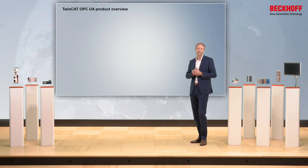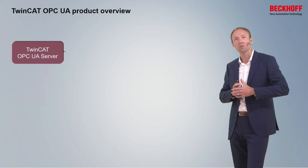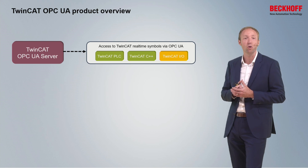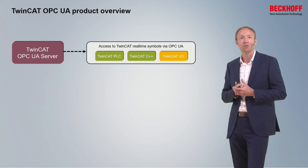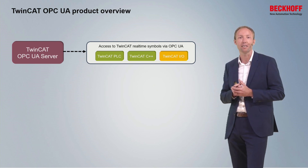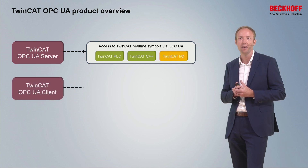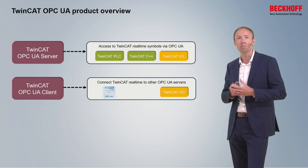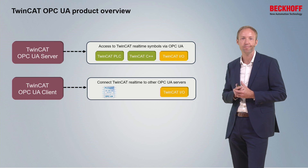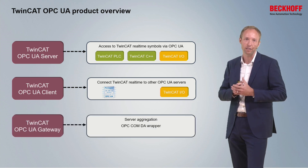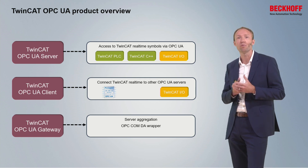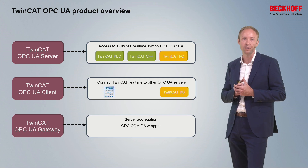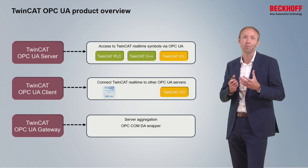There are three major components inside TwinCAT OPC UA. The TwinCAT OPC UA server provides access to symbols from the TwinCAT Realtime — simple variables, data structures, or methods callable by an OPC UA client. The TwinCAT OPC UA client lets you access other OPC UA servers to read/write variables or call methods, available as PLC open function blocks or an easy-to-configure I/O device. The TwinCAT OPC UA gateway wraps the server, provides a free-of-charge OPC COM DA interface, and lets you aggregate multiple TwinCAT OPC UA servers.